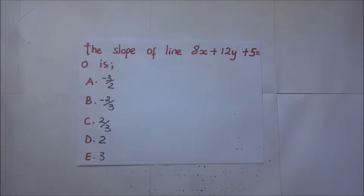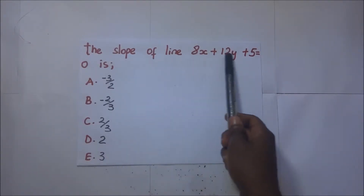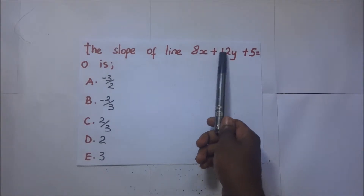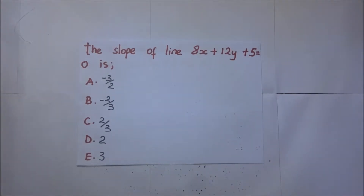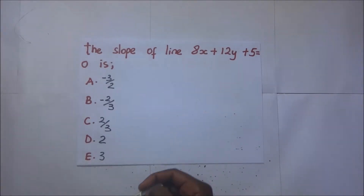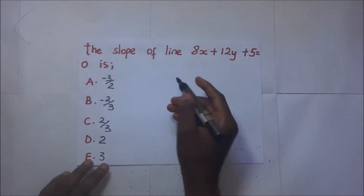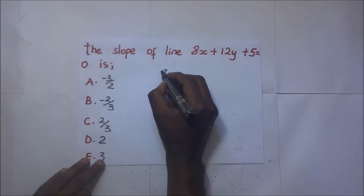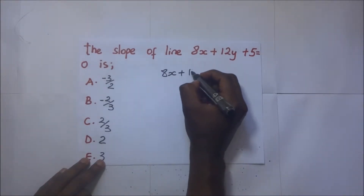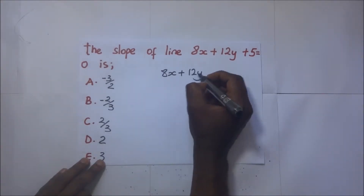The slope of line 8x plus 12y plus 5 equals 0 is what we need to find next. We just have to rearrange this equation in the form y = mx + c, and we will be able to identify the slope. Starting with 8x plus 12y plus 5 equals 0.